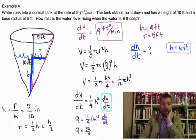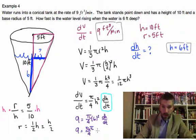Oh, there should be a pi. Where did my pi go? Right here. Oh, those are different colors. Yikes. Pi right here. Pi right here. All right. Times dh/dt.